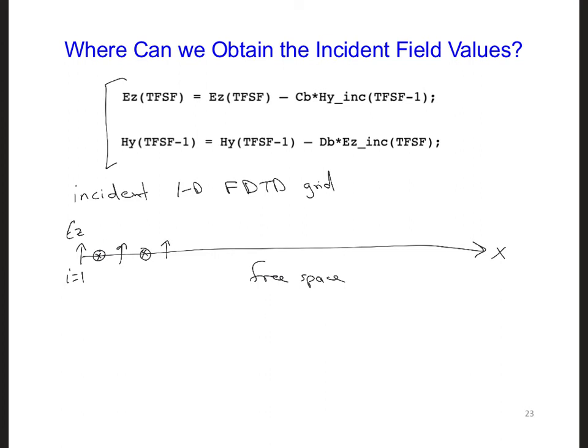If we sample the HY component of this incident grid at TFSF minus 1, then we can sample that here, and we can use it in the first correction term.